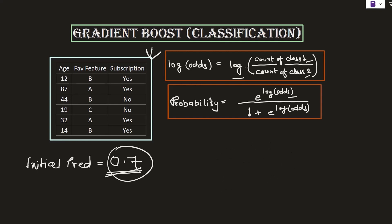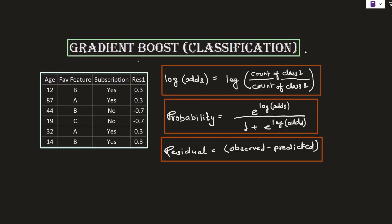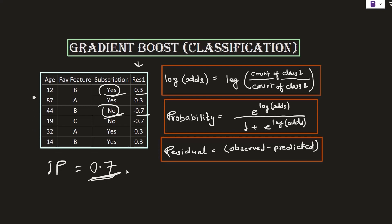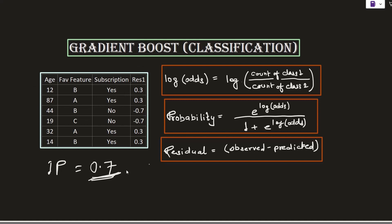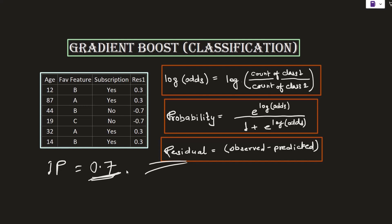As a next step we add a pseudo residual column, calculated using the same formula discussed in the previous lecture — subtracting the predicted value from the actual value. The residual 1 column represents the error made by the initial prediction. Since the initial prediction was 0.7, and considering yes as probability 1 and no as probability 0, subtracting 0.7 from 1 gives 0.3, and subtracting 0.7 from 0 gives minus 0.7.